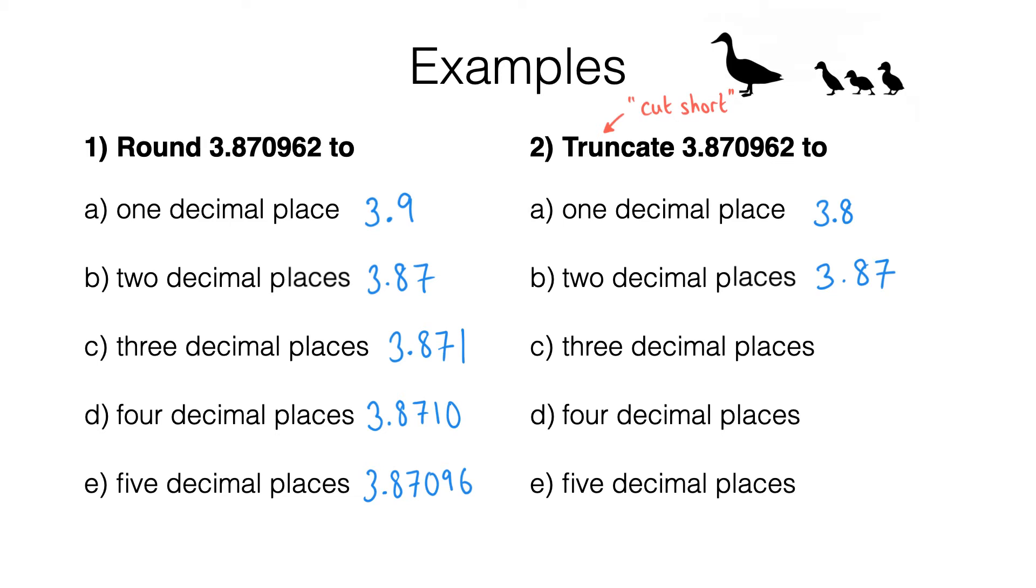For part C, you should have got 3.870 by cutting off all digits after the third decimal place. For part D, you should have got 3.8709.